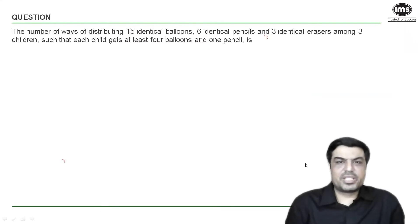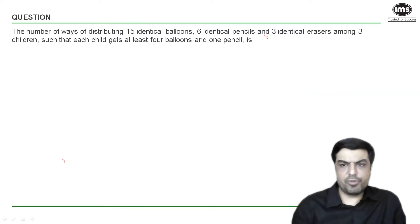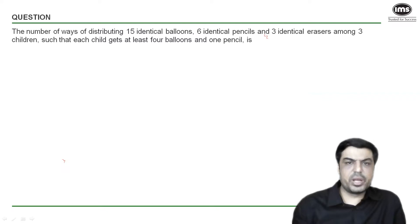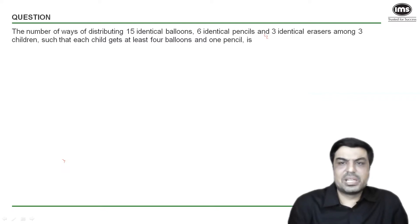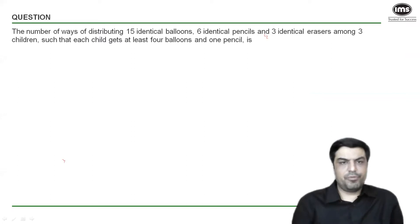Hello and welcome to the Best of CAT series by IMS. Let's look at the next question from Modern Maths. I would suggest you pause this video, attempt this question on your own, and then watch the solution. We've got a question from Permutation and Combination — we have to distribute 15 identical balloons, 6 identical pencils, and 3 identical erasers amongst three children such that each child gets at least four balloons and one pencil.